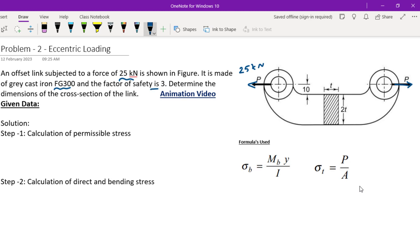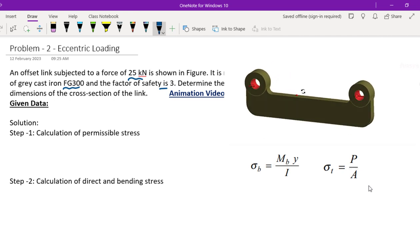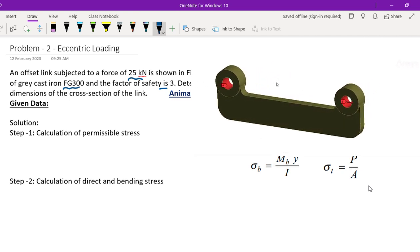An offset link is subjected to a force of 25 kilonewton. So the force applied is 25 kilonewton. It is made of gray cast iron FG 300 with a factor of safety of 3.